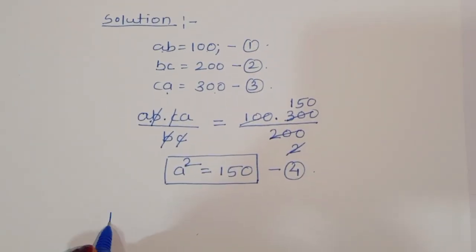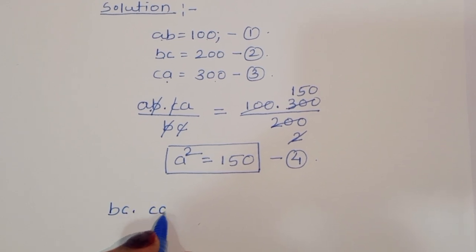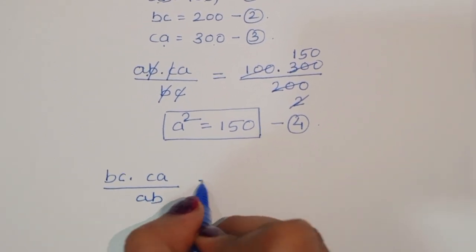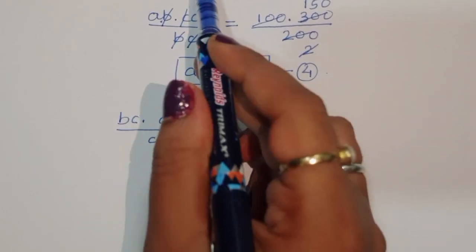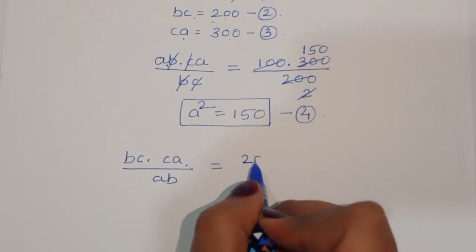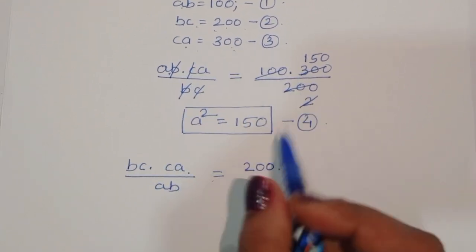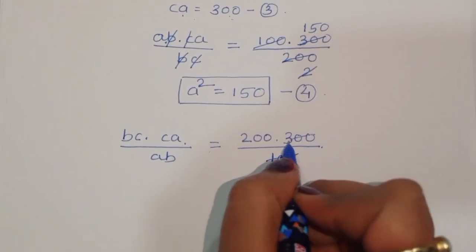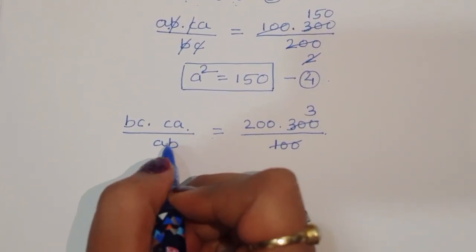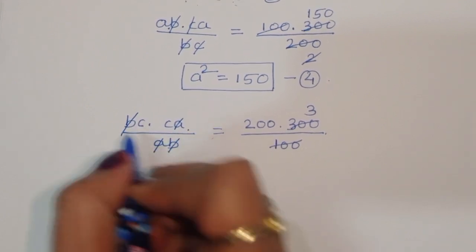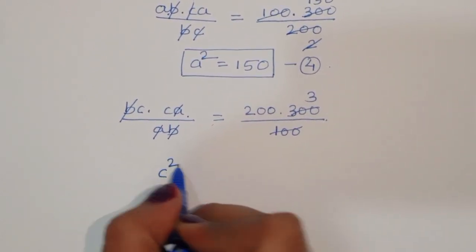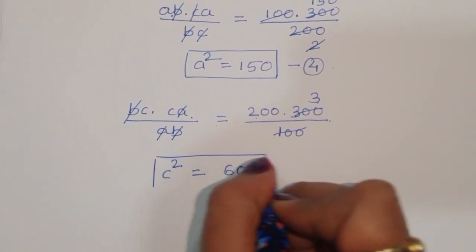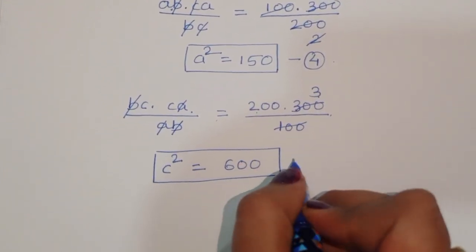Again, we can do BC times CA divided by AB. BC times CA divided by AB is equal to: BC is 200 times CA is 300, divided by AB which is 100. We can cancel A from A and B from B, so C squared is equal to 200 times 300 divided by 100, which is 600. This is the value of C squared. This is equation number 5.